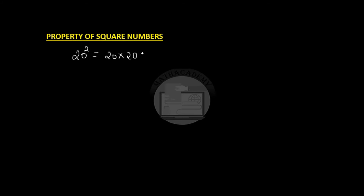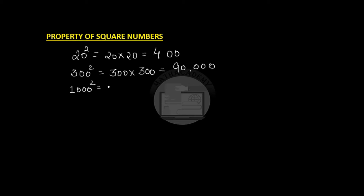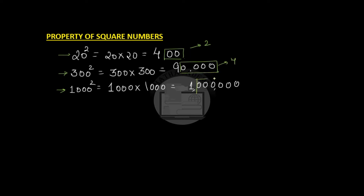Now let us look at another property of square numbers. Let us try to square 20: 20 squared is 20 times 20, which is 400. Let us try to square 300: 300 times 300 gives you 90,000 — that is 9 followed by 4 zeros. Let us try to square 1000: 1000 times 1000 gives us 1 followed by 6 zeros. How many zeros here? 2 zeros. Here? 4 zeros. Here? 6 zeros.